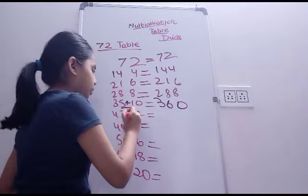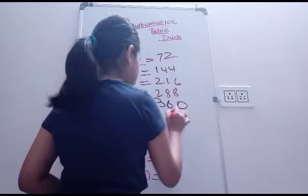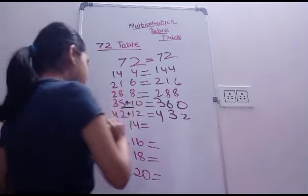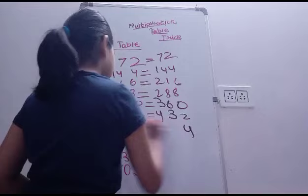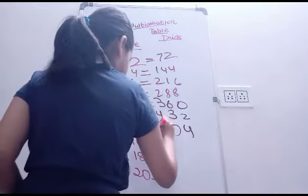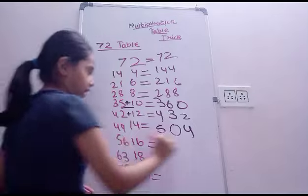Next number, 2 plus 1 is 3, so we get 432. Right? Now next, 4. 9 plus 1 is 10, carry it, and we get 504.